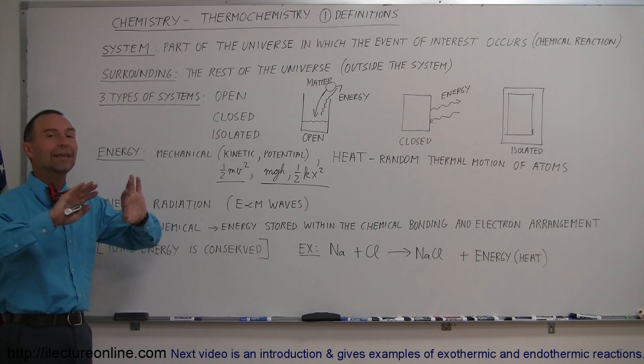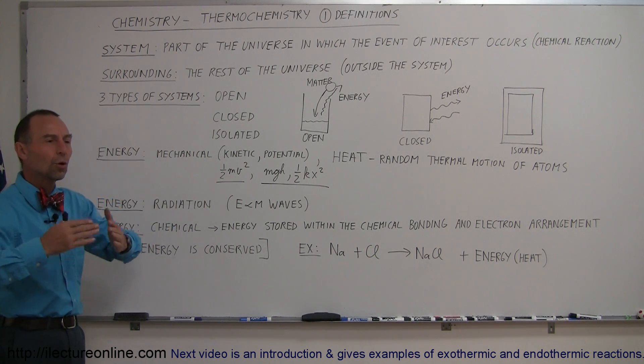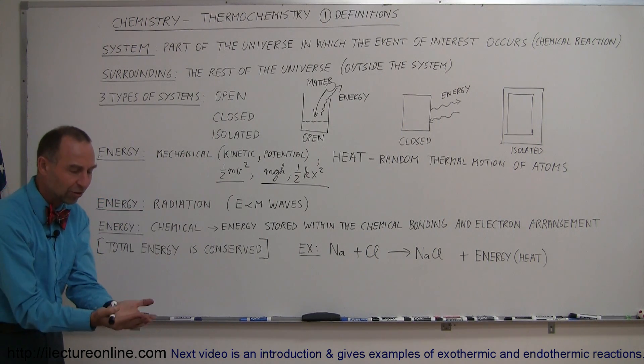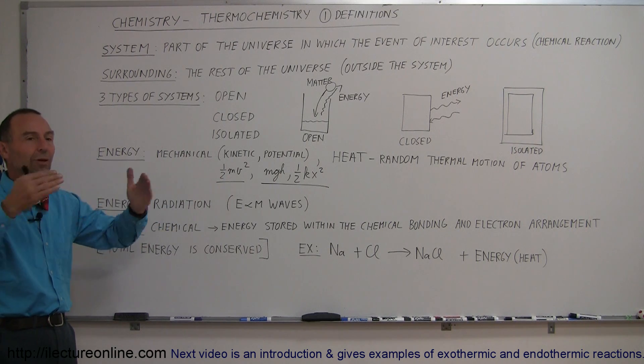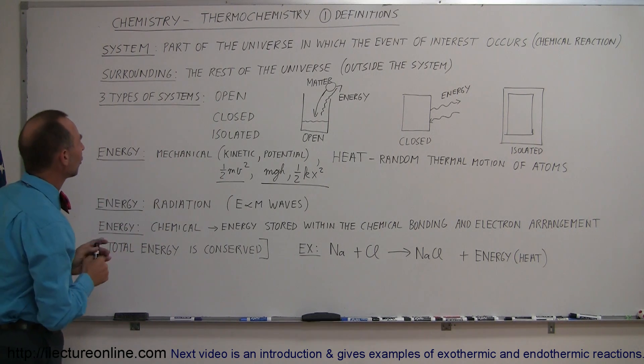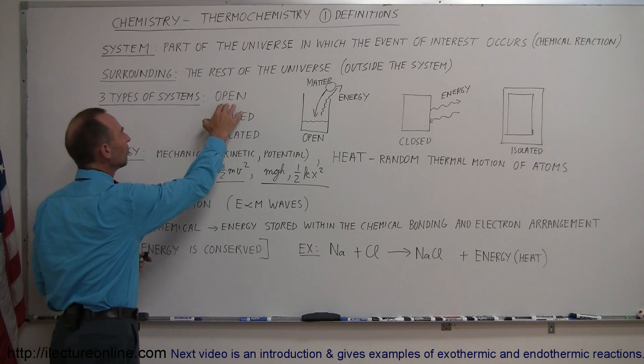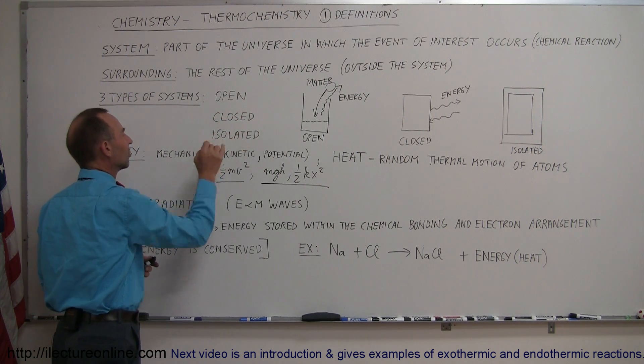Now, the surrounding is the rest of the universe and so we want to understand the interaction between what goes on in the system and how that interacts with the rest of the universe. Therefore, we have three types of systems. We have what we call an open system, a closed system, and an isolated system.